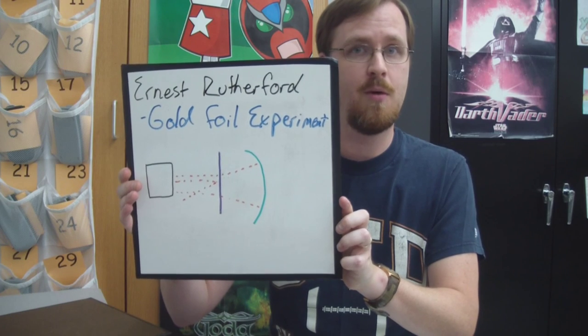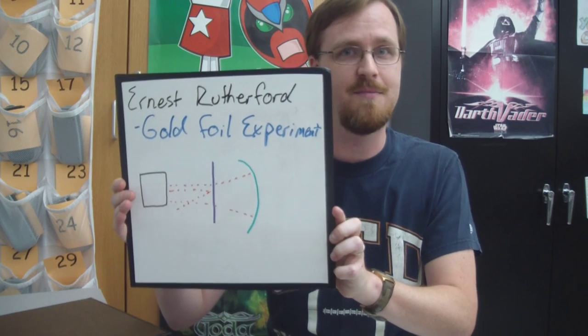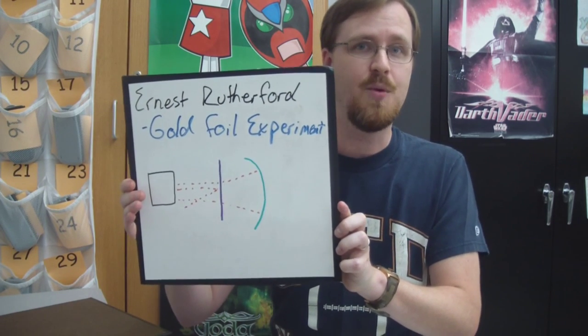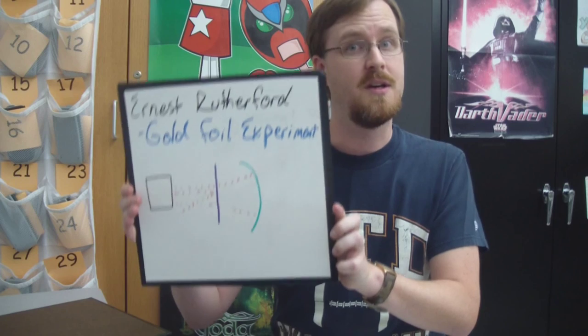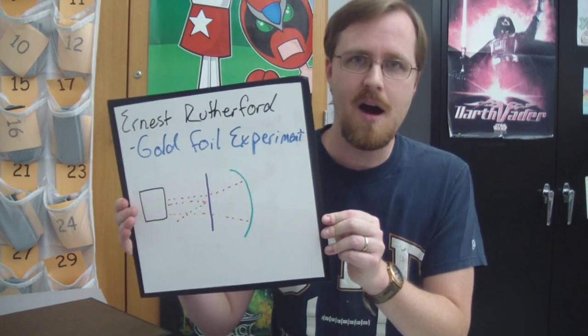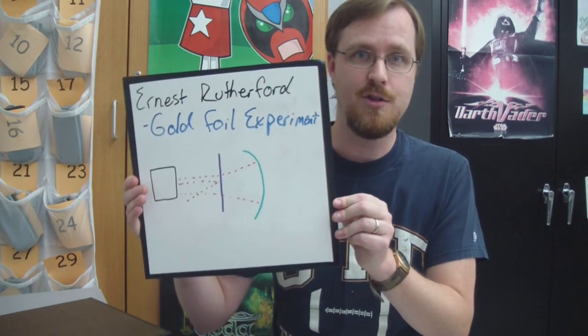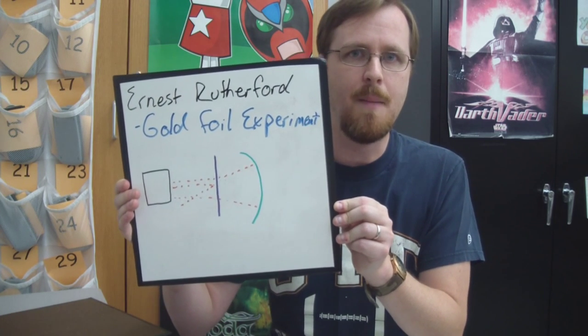And on the other side was an alpha particle generator. This alpha particle generator would create alpha particles, which are nothing more than positive radioactive particles. Now he thought that when he shot all of these particles at the gold foil, everything would go through, because Thompson's model suggested that's what would happen. But that's not what happened. Instead, as you can see, some of the particles went all the way through, but some of them bounced back. This led Rutherford to say it was like taking a shotgun and shooting it at a piece of tissue paper and having the bullet ricochet back.